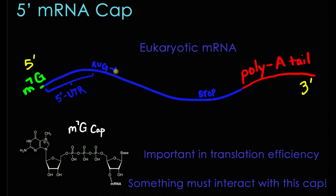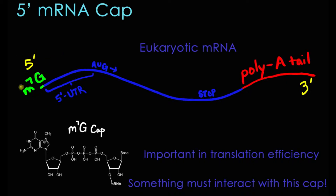Before we delve into the CAP-CAP binding protein interactions, we should do a quick recap of what the CAP actually is. Here I've sketched out a eukaryotic mRNA molecule, and I've pointed out some important features. Up at the very front, this is the 5' end, and here is the M7G CAP.